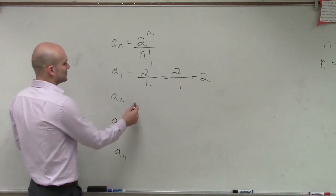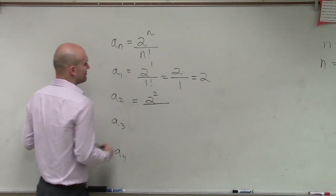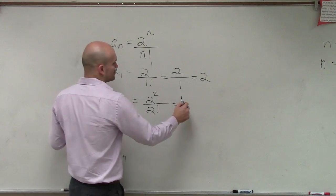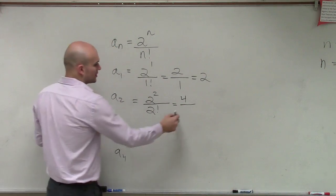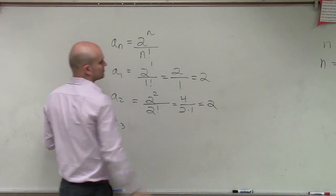Alright, now we do a sub 2. So we're going to have 2 raised to the second power divided by 2 factorial. Well, that equals 4, and then 2 factorial is 2 times 1, which is just going to equal 2 again.